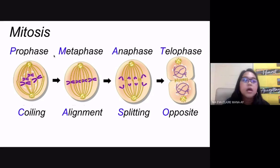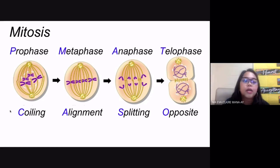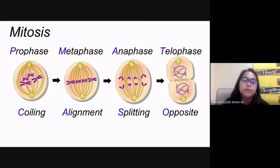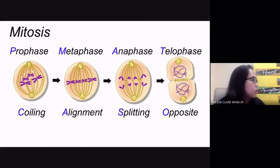Remember the acronym PMAT for the different stages of mitosis, and CASO for the important events at each stage. Prophase is the longest phase; metaphase is the shortest. You will be asked about this in your independent work.